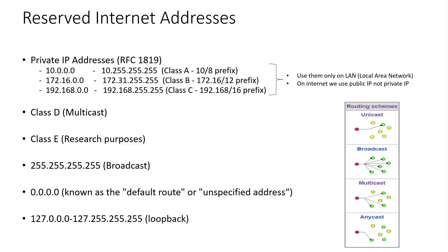Hello, this session is about reserved IP addresses. The first type is private IP addresses. They are used only on local area networks. Here we have different ranges of private IP addresses depending on the class that we can assign to a host in a local area network. The next type is class D — it is used for multicast. Multicast means sending a request to a group of hosts. Unicast means sending a request to a single host. Broadcast means sending a request to all hosts. And anycast means sending a request to any host.